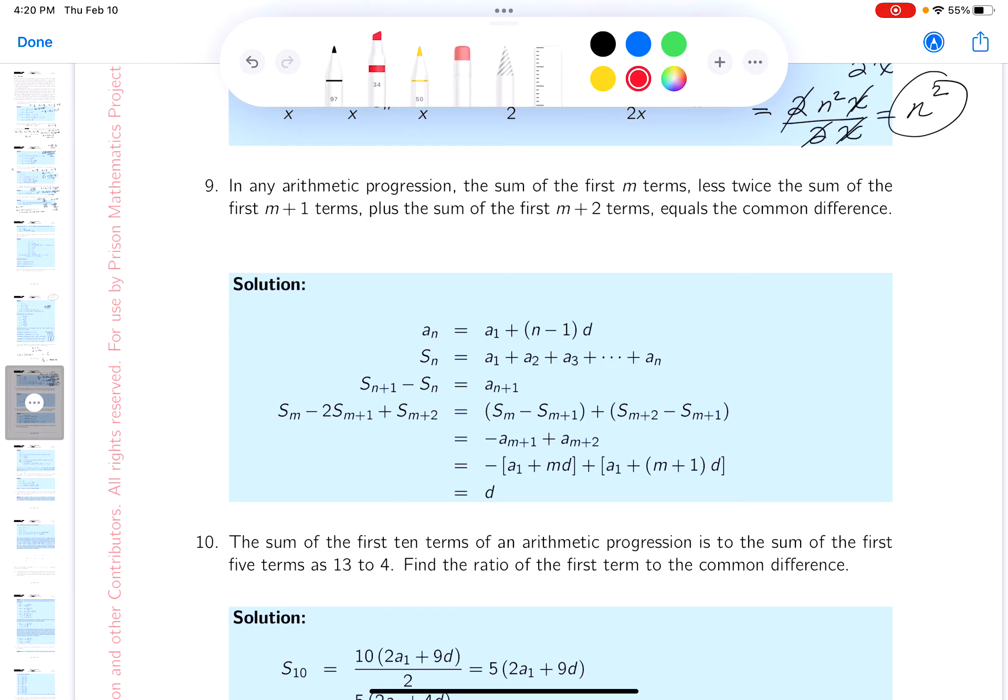The first thing they do is they simply write the relationship down for a_n, and that's one you probably should know now. The next thing they did was they wrote down what S_n equals. S_n is the sum of a_1 up to a_n.